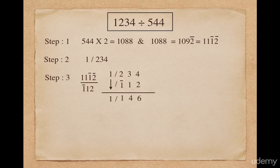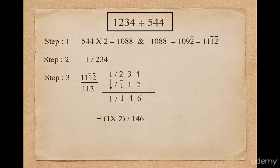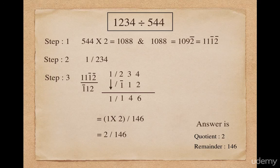In the first step I multiplied the divisor with 2, so I will have to multiply the final quotient with 2. So the final quotient will be 2 and the final remainder will be 146. So the answer is: quotient is 2 and remainder is 146. This is all about the Vinaculum concept and Anurupiena concept. Thank you guys.